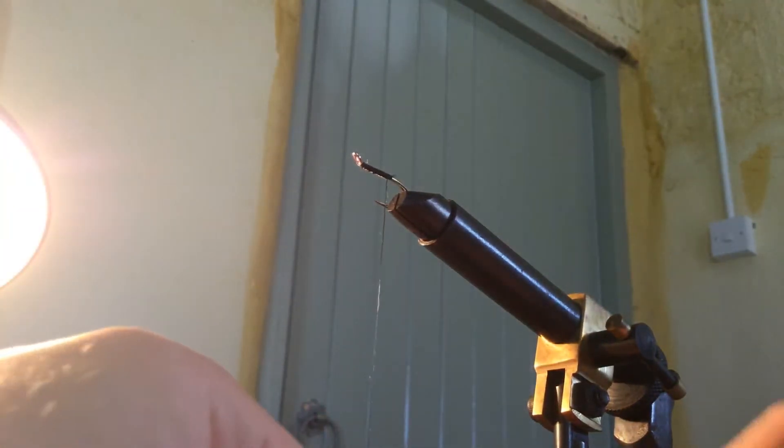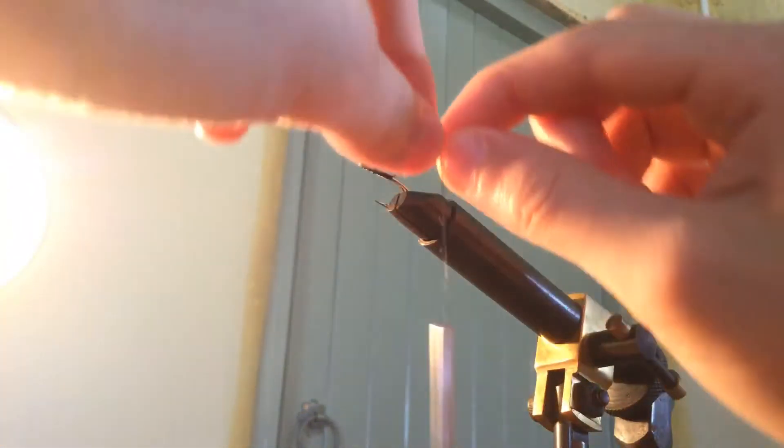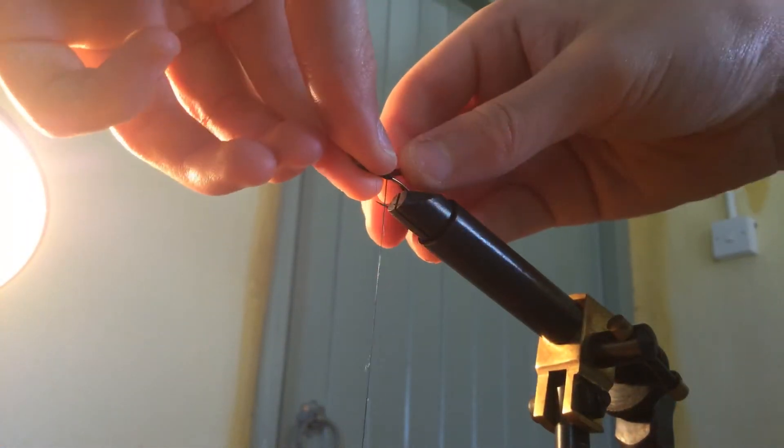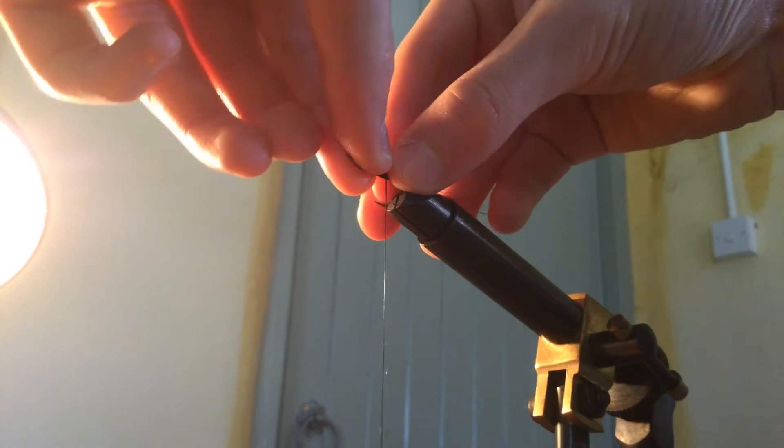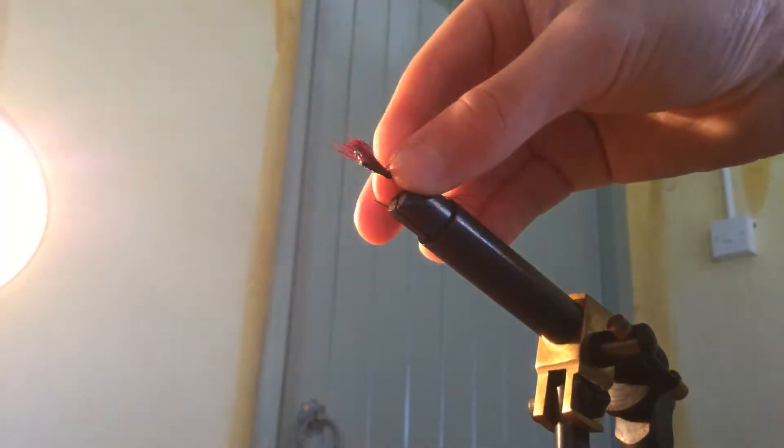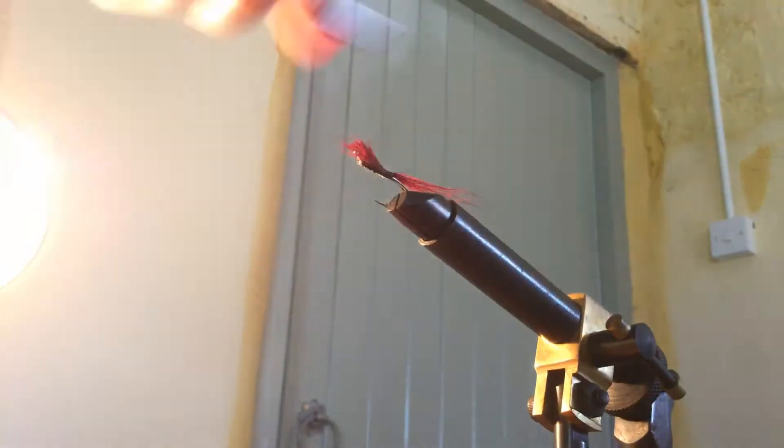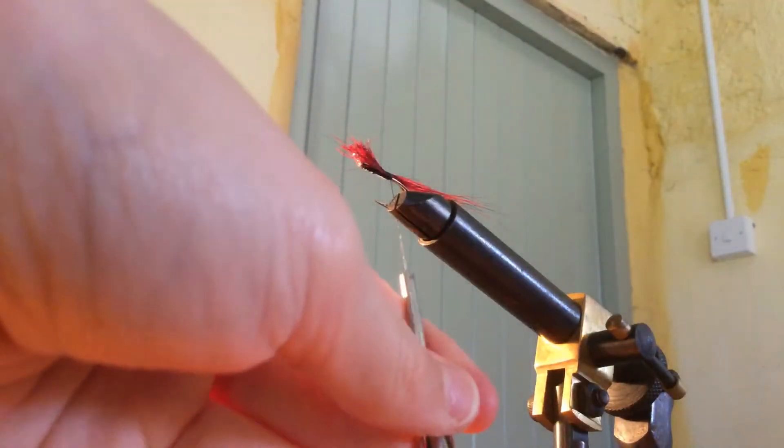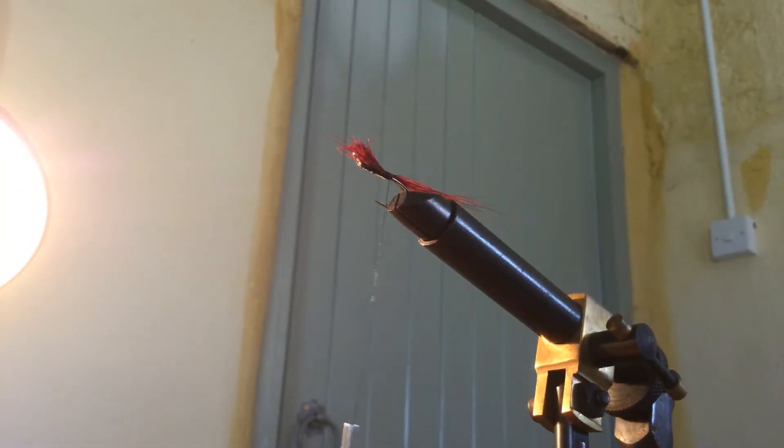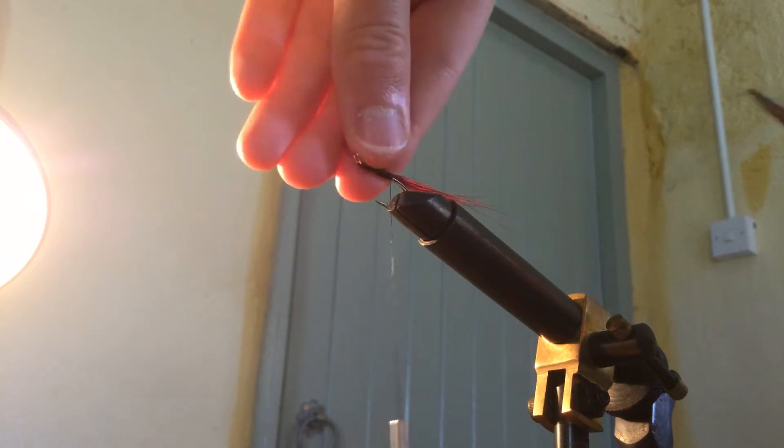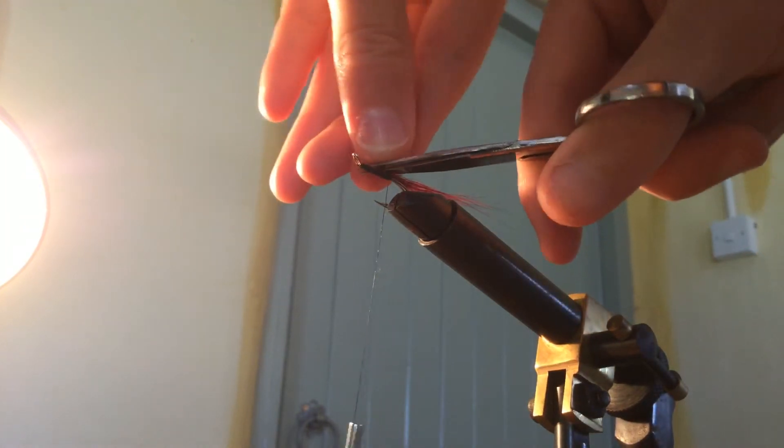And what we do is we just lower, thread it through, up, then place it down gently. I'm just going to bring it forwards a little bit. So there we go guys, we have tied in our sort of whiny coloured red bucktail. I'm just going to snip that now.